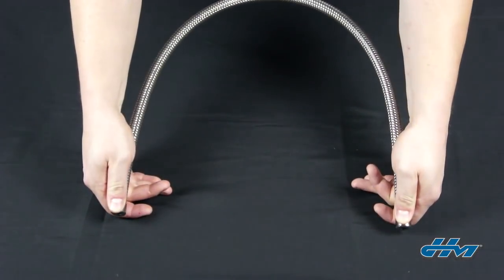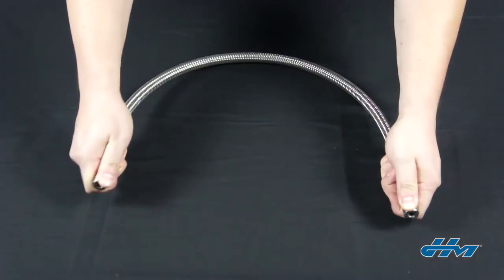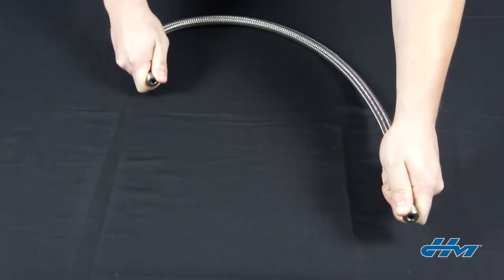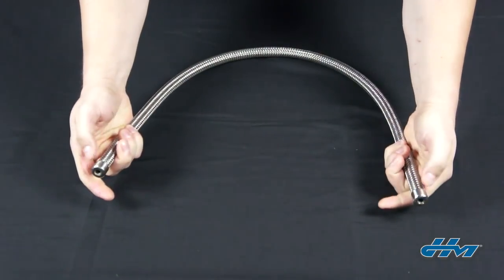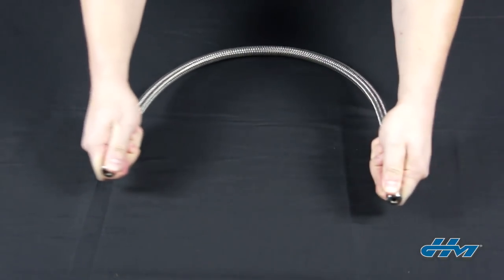Installing the hose in a loop is a great way to accommodate both vertical and horizontal movements. Don't stretch the hose with its live length between two end points. This puts a huge amount of stress behind the fittings, which is where the hose is most likely to fail. Do ensure that there is enough live length for the hose to function properly.